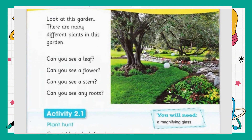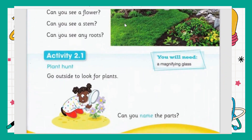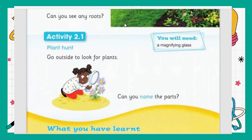We cannot easily see a stem, but if we look at the tree, this is the stem of the tree. When a plant grows bigger and bigger it turns into a tree. Can you see any roots? Usually roots are under the soil, but here you can see the roots of the trees that are very close and binding towards the soil. This is known as roots.